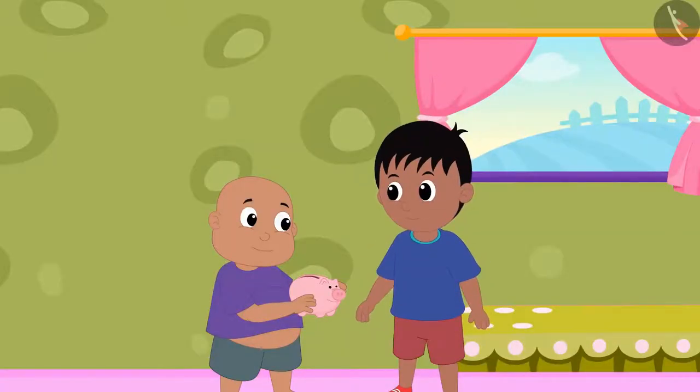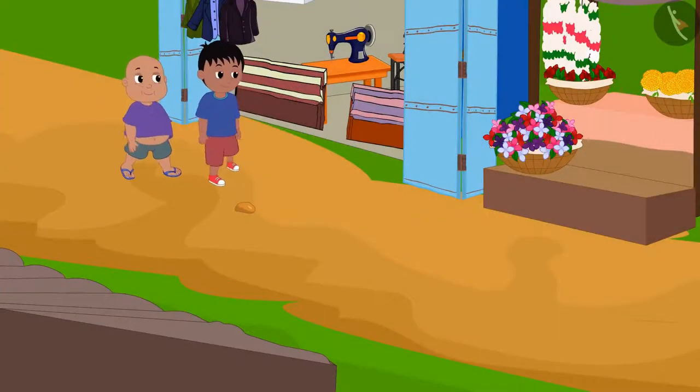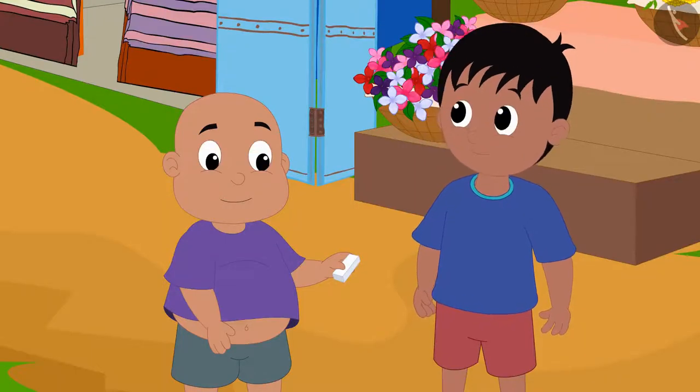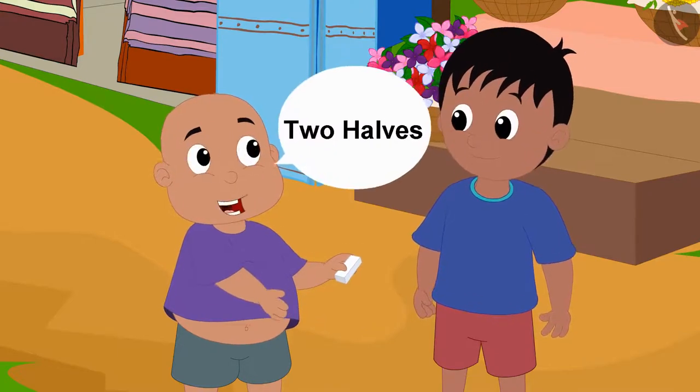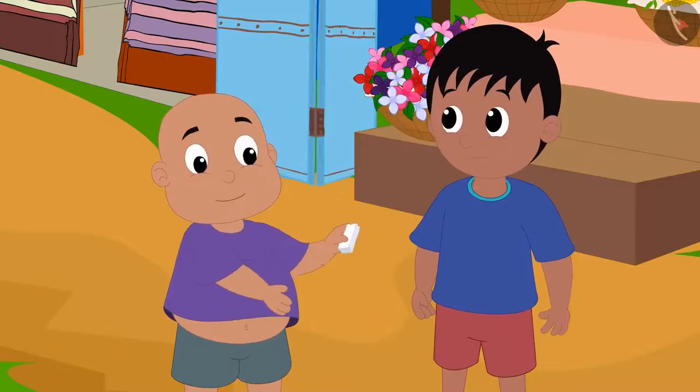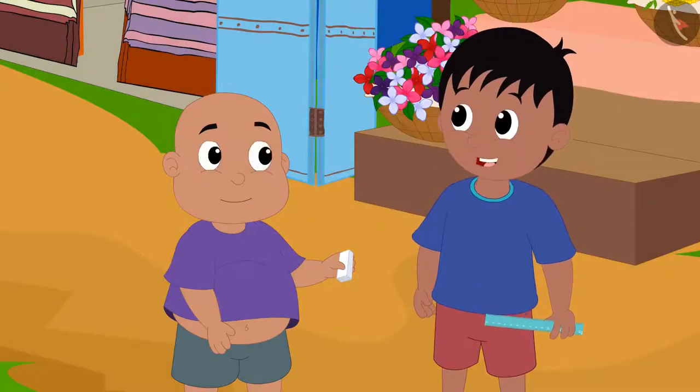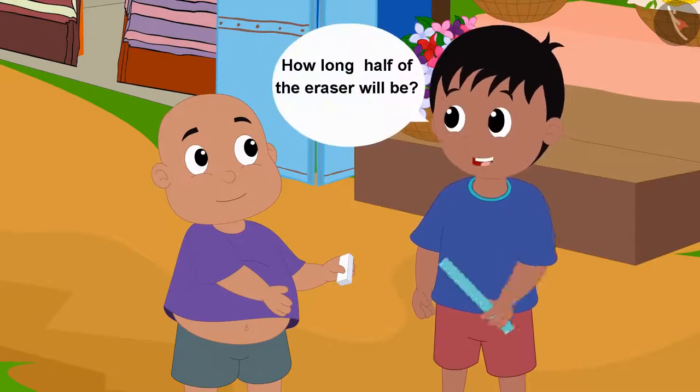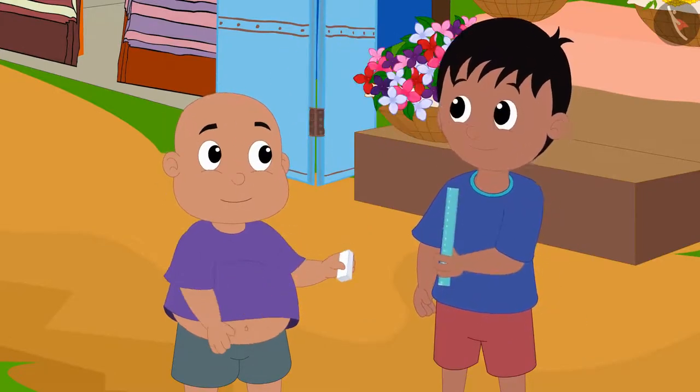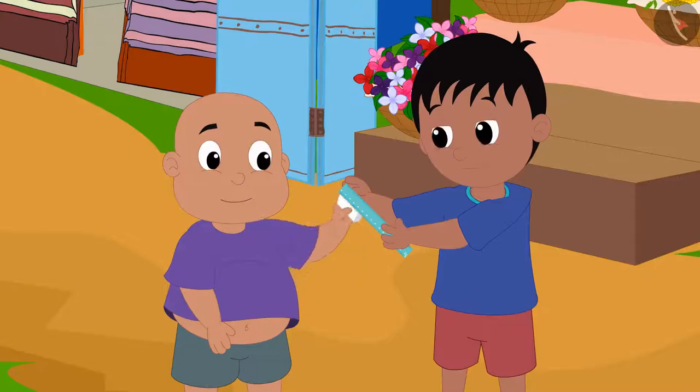Raju and Bablu collected some money and bought an eraser from the market. Raju, let us divide this eraser in two halves, Bablu said to Raju. Okay, let's measure it using a ruler so that we know how long half of the eraser will be. Raju measured the eraser with a ruler.